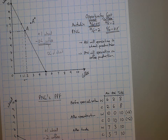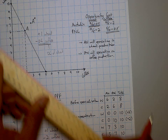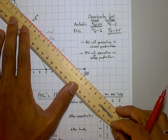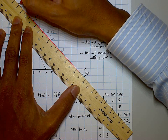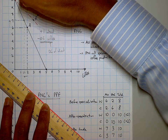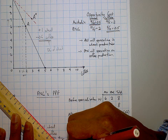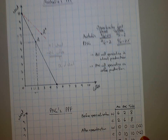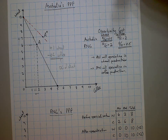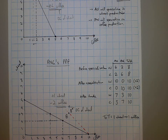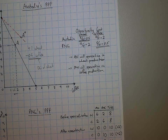To draw a line representing the terms of trade, remember the terms of trade is one to one, so draw a line with a gradient of one — lining up ten to ten. Do the same for Papua New Guinea. The red line represents the terms of trade for Australia, and similarly for PNG. Note the terms of trade does not necessarily have to be one to one — it can be different.